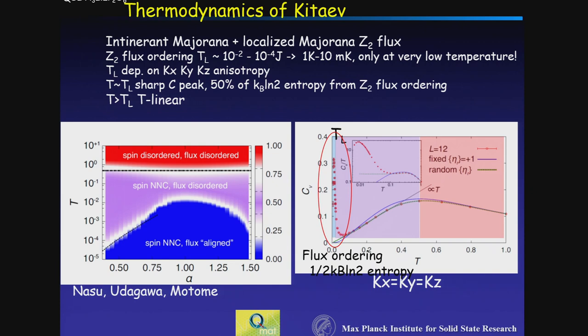They say it's a reflection of the fractionalization of spin-1/2 moments. You have matter Majorana fermions and itinerant Majorana fermions, and the localized Z2 Majorana fermions carry 50% of entropy. For pure Kitaev physics, we know exactly what it is — no confusion about a gap. We know how physical properties behave. That's the nice part of Kitaev physics.